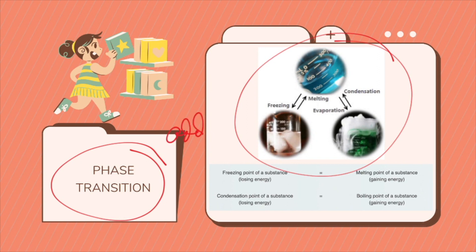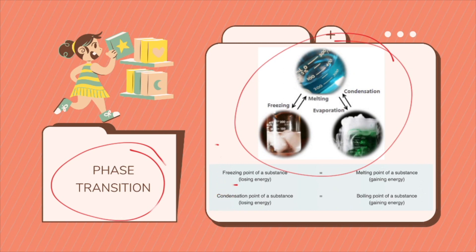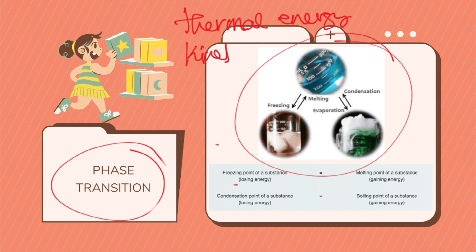Just add heat and a puddle of water will evaporate into a gas. Loss of heat and water vapor — a gas — will become dew on your grass in the morning. Phase changes are caused by the transfer of thermal energy. This is either a gain or loss of heat, which changes the amount of kinetic energy in the particles of a substance. There are specific transition points when the kinetic energy and intermolecular forces between particles change enough to cause a phase change or a phase shift.